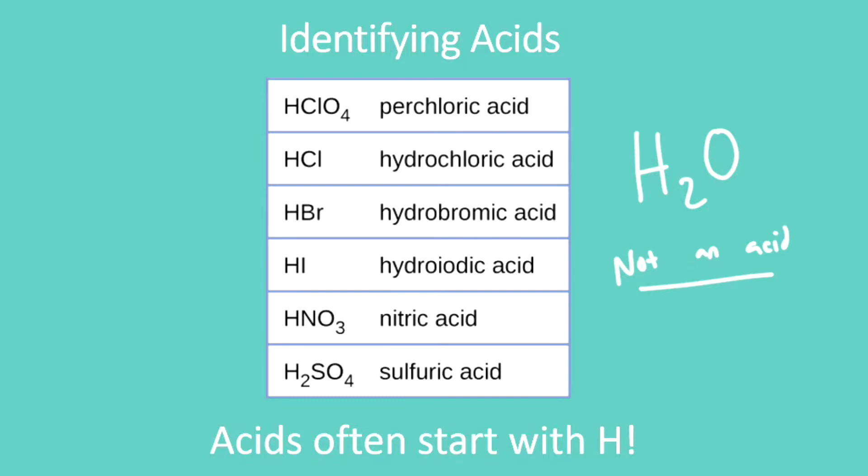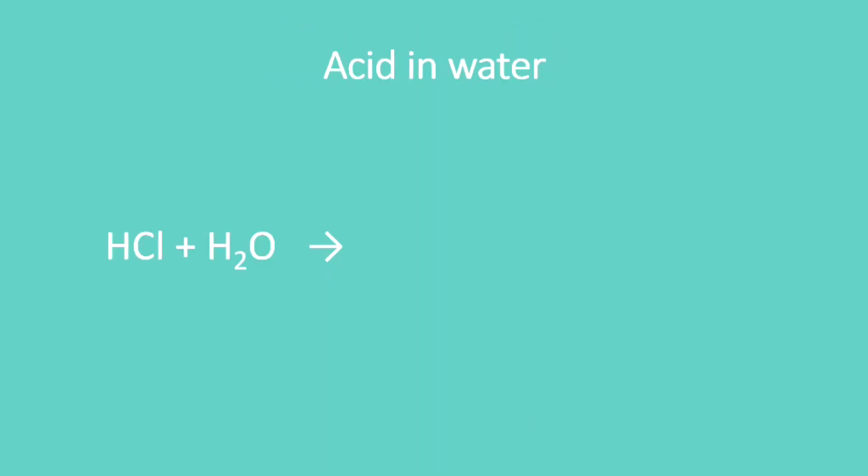So how is water important? And secondly, why is this H always there at the start of acids? Well, we can understand both of those questions if we take a look at what happens when we place acid in water. We take HCl, that's one of our acids, hydrochloric acid, and we mix it with water. What happens?